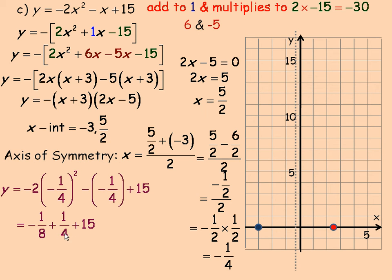Subtracting negative 1 quarter, same as adding 1 quarter, and then we have the plus 15 in the end. Now, in order to add all this together, I need a common denominator. So the common denominator would be 8.